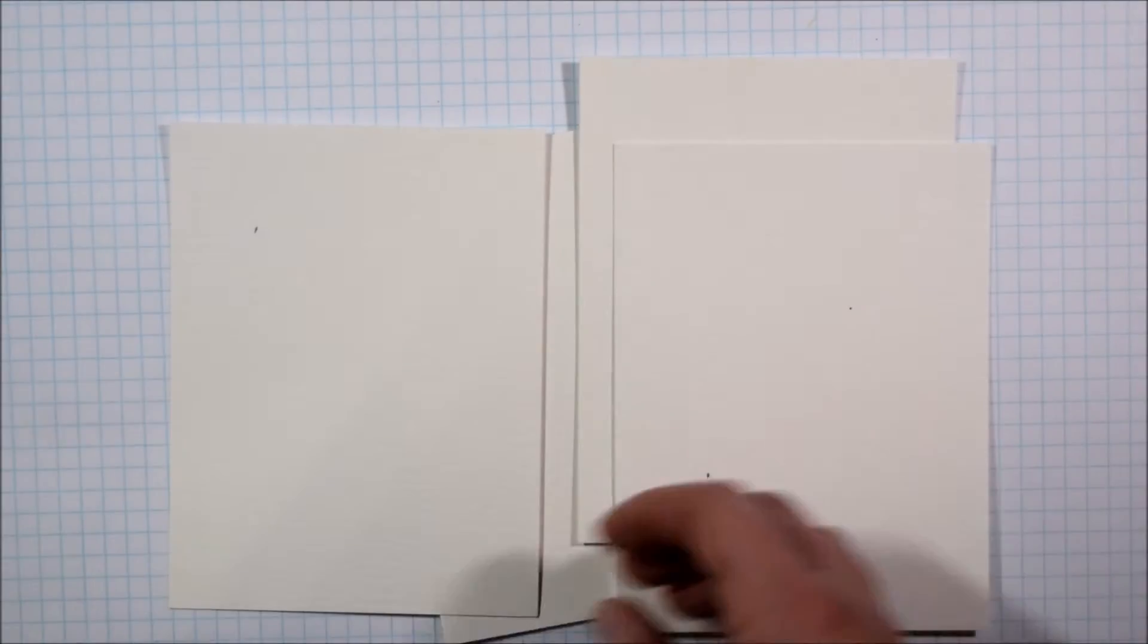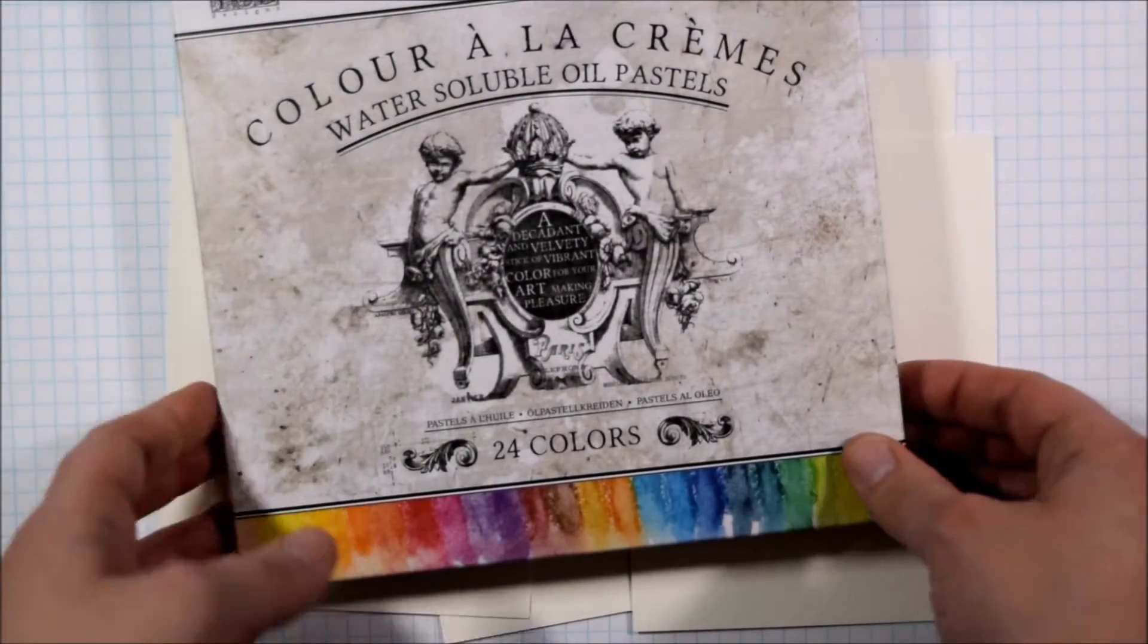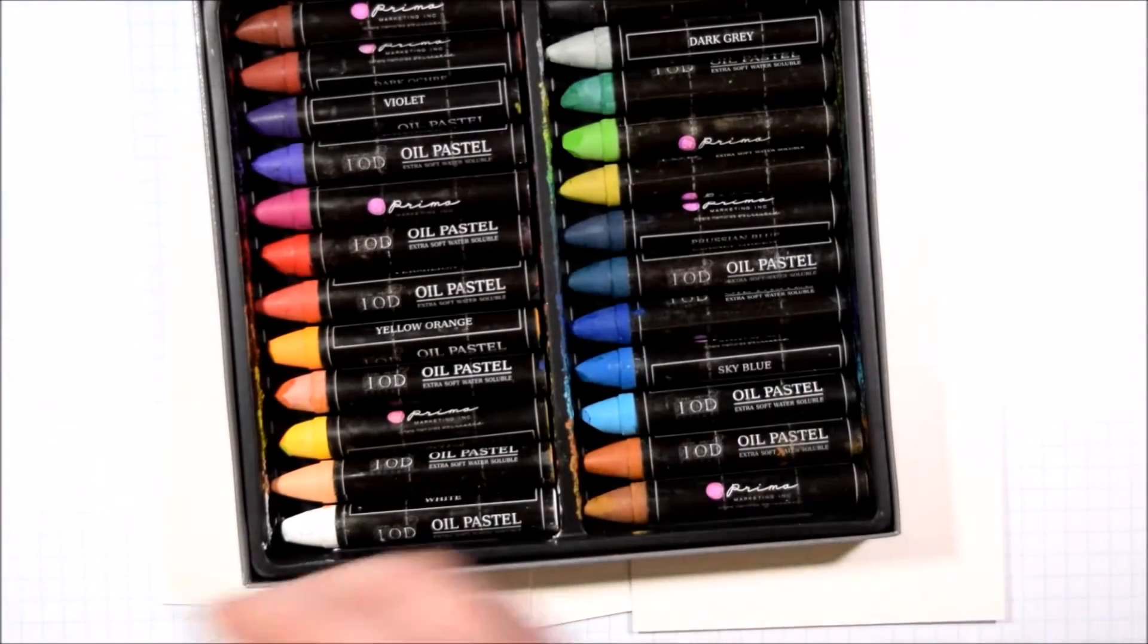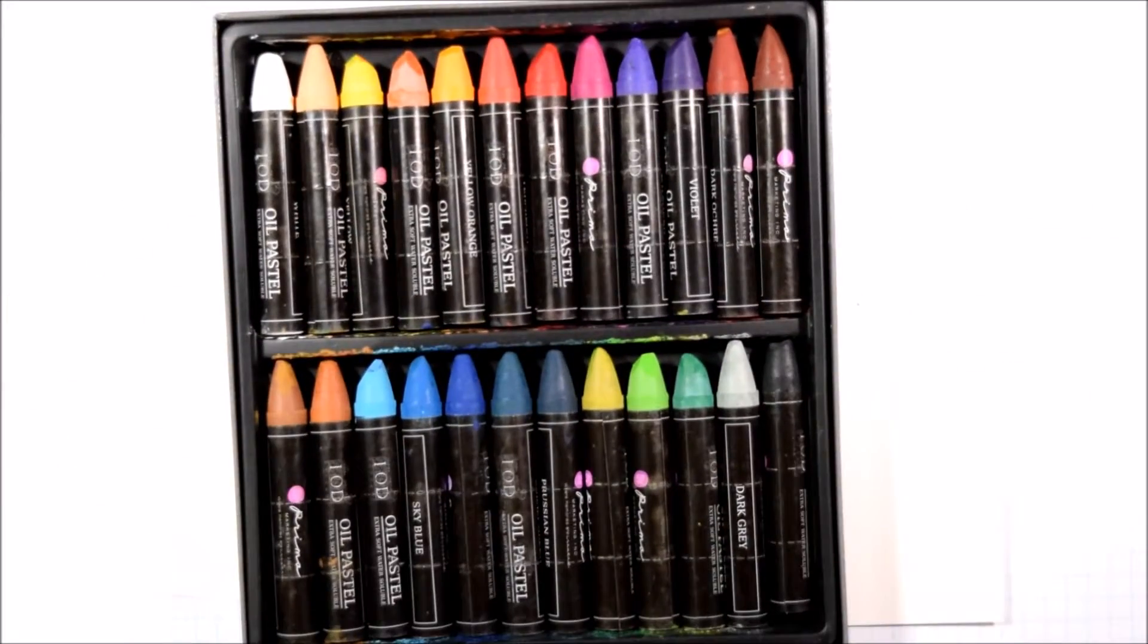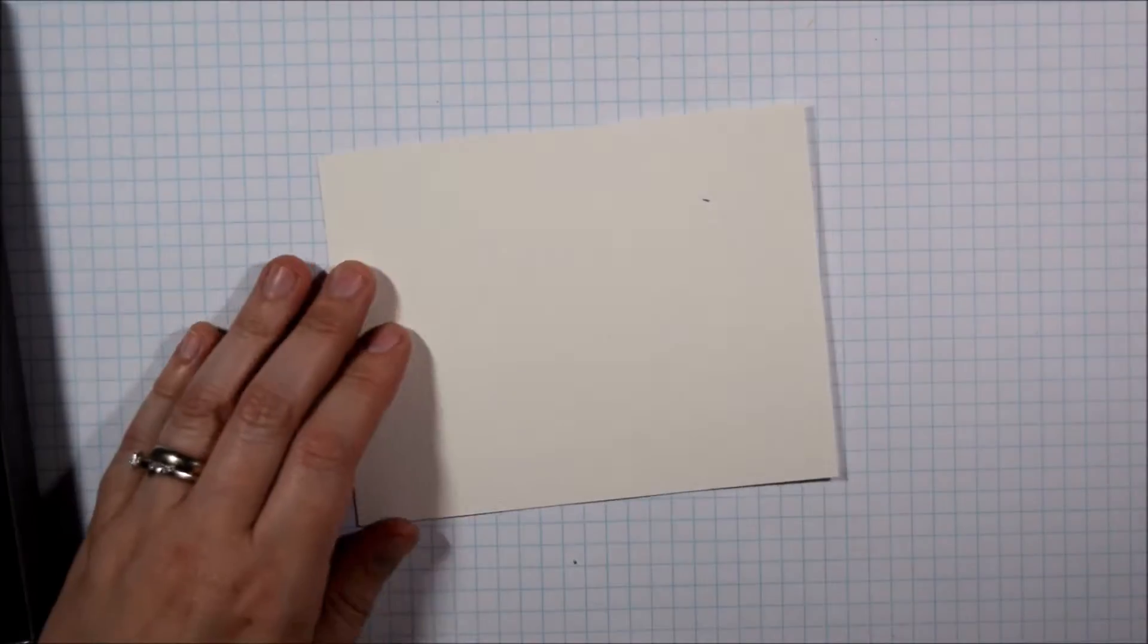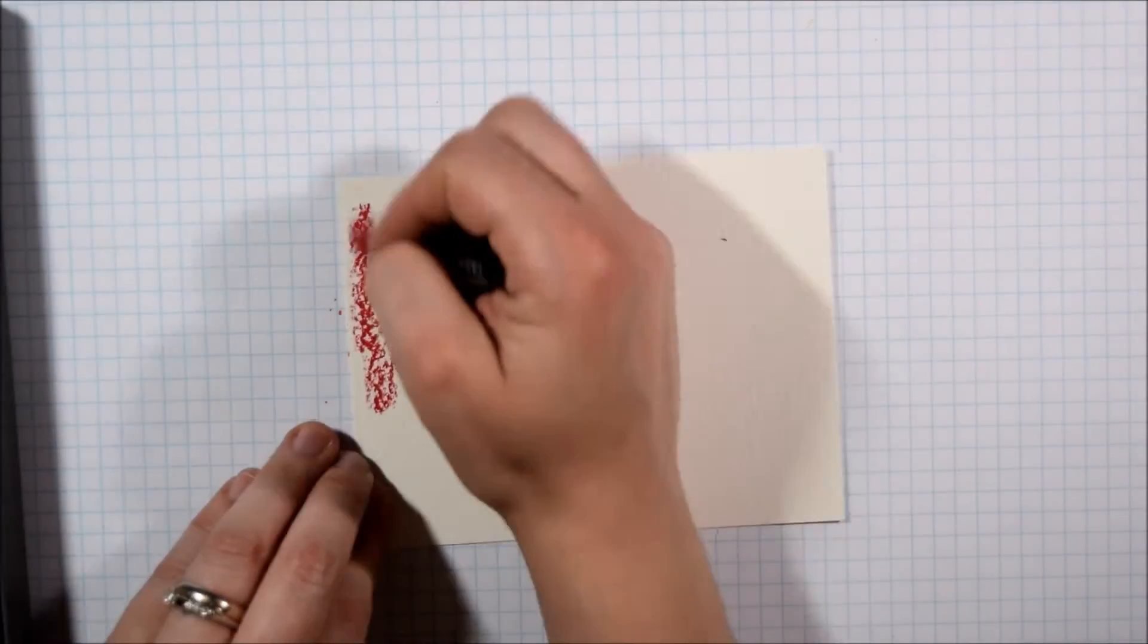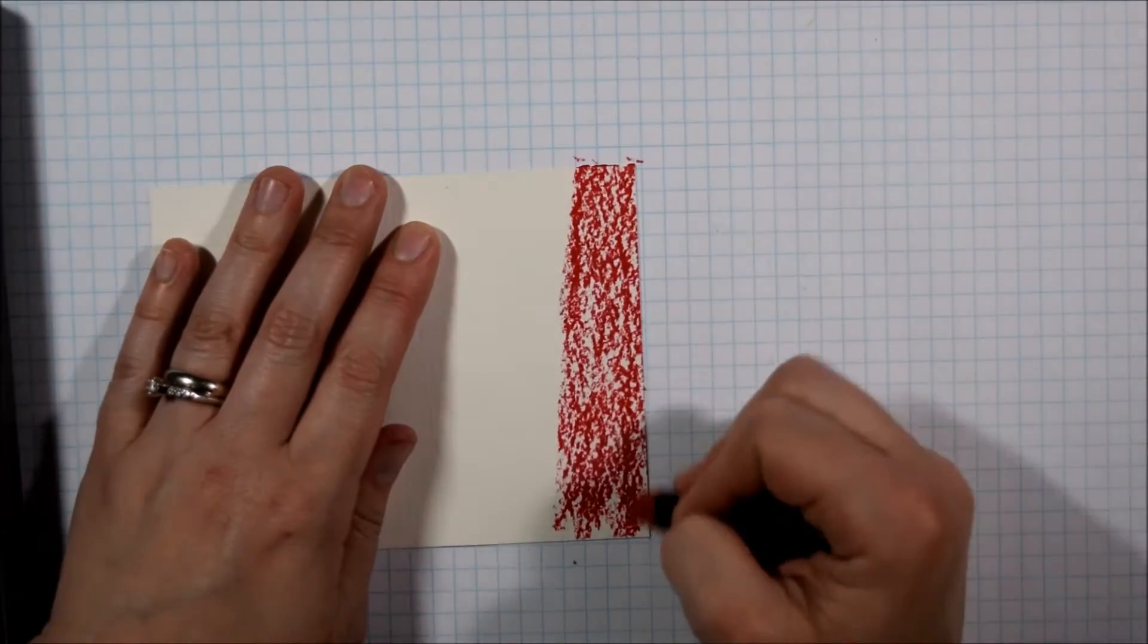For today's project I'm going to show you some fun ways that you can use any stencil in your stash with the Prima water soluble oil pastels. It gives a really fun effect and some layers of color, so I am going to start by adding a base layer of the oil pastels and then I will show you how you can do some fun removing of color with the stencils to create some really fun backgrounds.